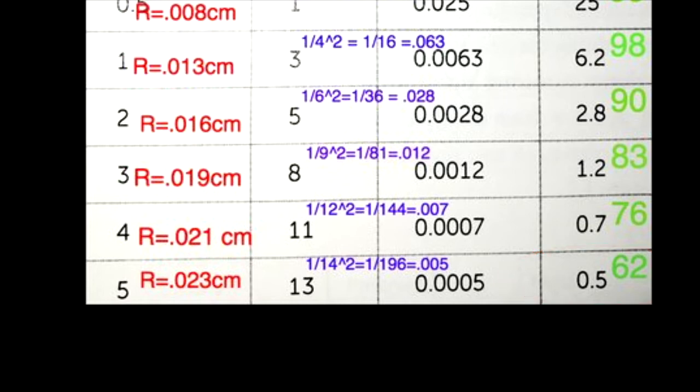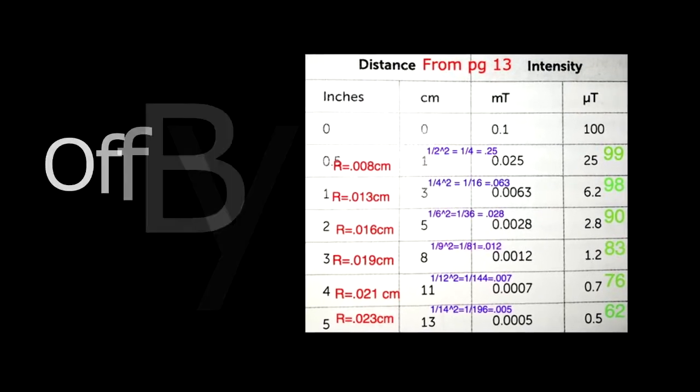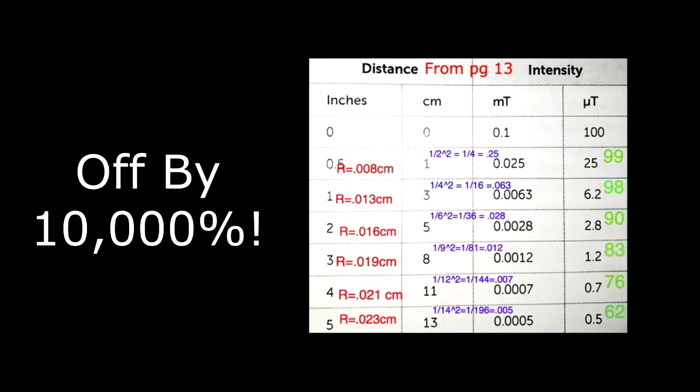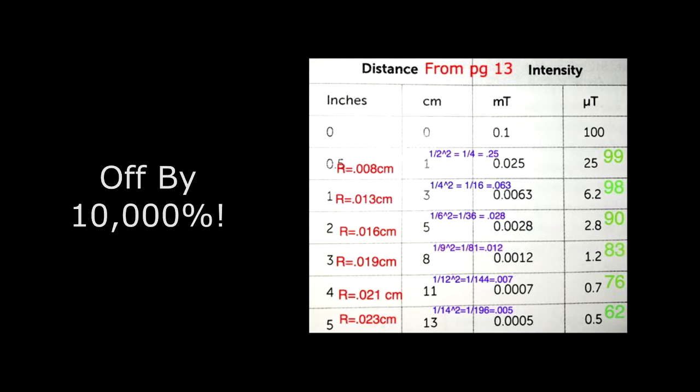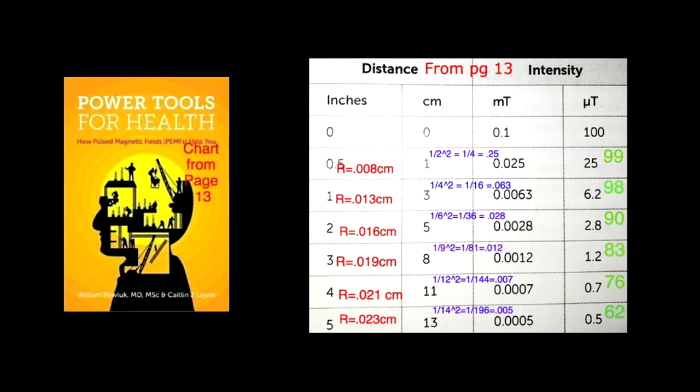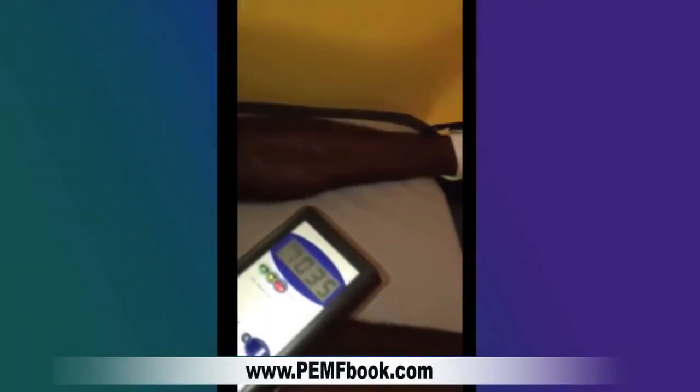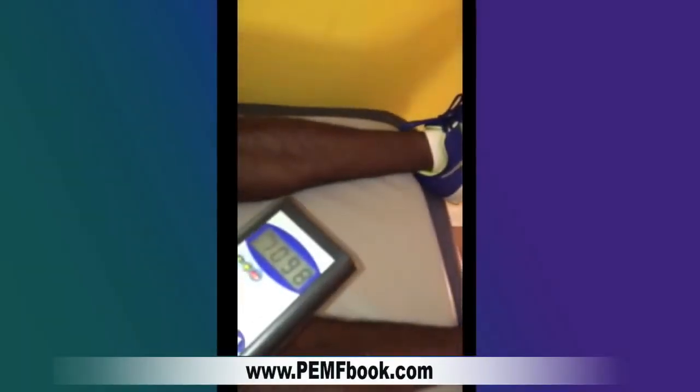Many of the PEMF devices on the market do use larger coils. So for larger coils like the IMRS and Beamer, that number that Dr. Pollack is listing is not just a little off, it's off by 10,000%. The reason I have such a problem with this is that he uses this in his book to justify that low-intensity devices won't penetrate all the way through the body, when in fact, I've done many video demonstrations showing that they do.